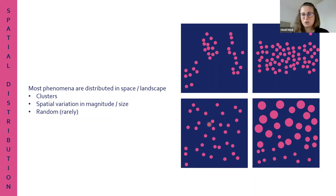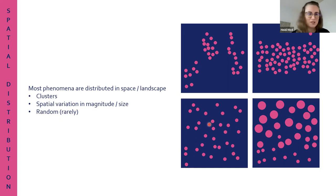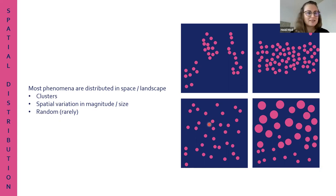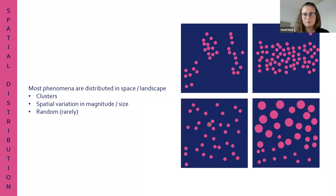I teach geography here at the University of Helsinki. When talking about spatial phenomena or spatial distribution, I always try to ask my students if they know an example of a completely randomly distributed phenomenon. The only thing I can think of is asteroid craters - how they hit the Earth.